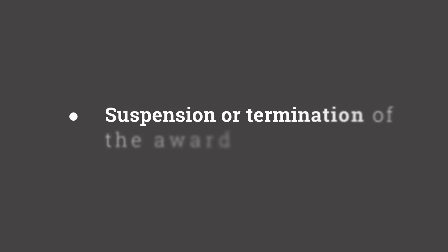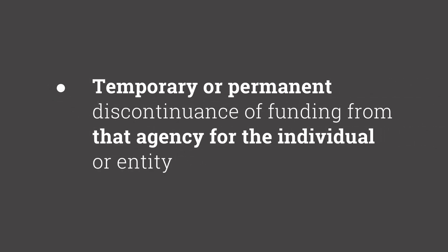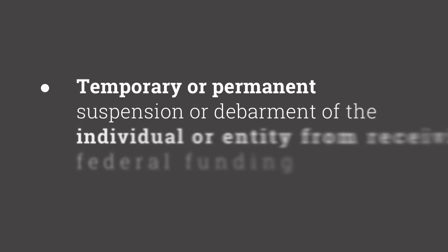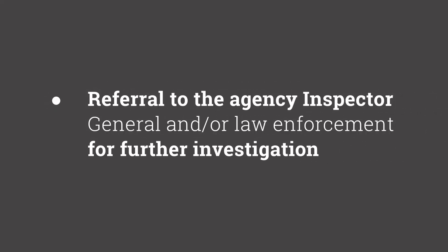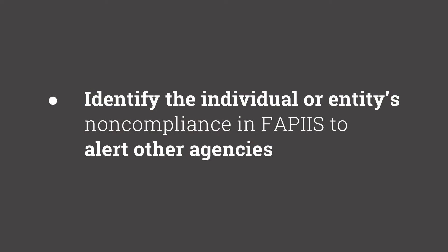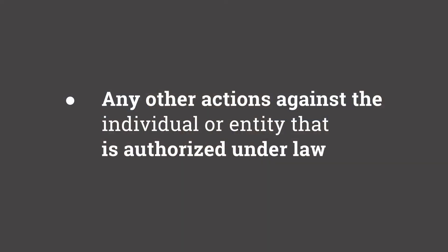Enforcement actions that an agency may take for failure to properly disclose include rejection of the application, suspension or termination of the award, temporary or permanent suspension or debarment of the individual or the entity, referral to the agency inspector general and/or to law enforcement to determine whether any criminal or civil laws have been violated, and identification of the individual's poor past performance in FAPIS — the Federal Award Performance and Integrity Information System — which will alert other agencies of the failure to meet the disclosure requirements, and any other actions that the individual or entity may be subject to under law.